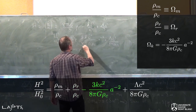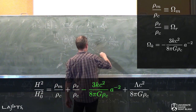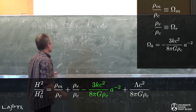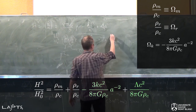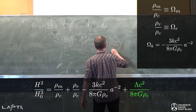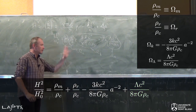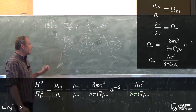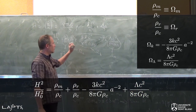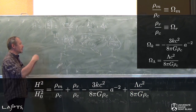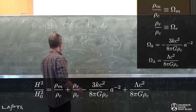Tout ce terme avec le signe moins, on l'appelle Ω_K. C'est aussi un nombre sans dimension. Et puis le terme de constante cosmologique, on lui donne aussi un nom : Ω_lambda. Ce sont donc quatre paramètres cosmologiques qui décrivent la contribution des différentes composantes — matière, rayonnement, courbure et constante cosmologique — au contenu de l'univers, tout ça rapporté à la densité critique ρ_C.